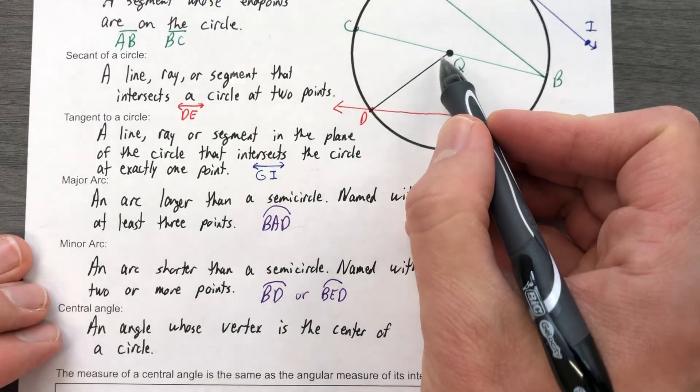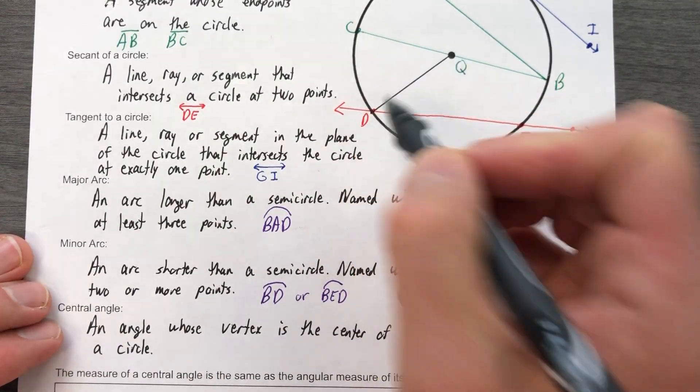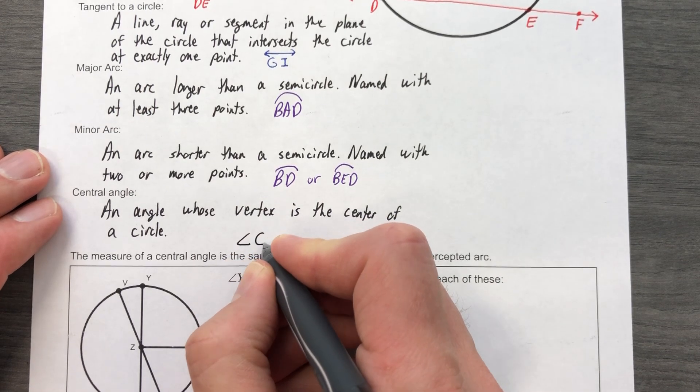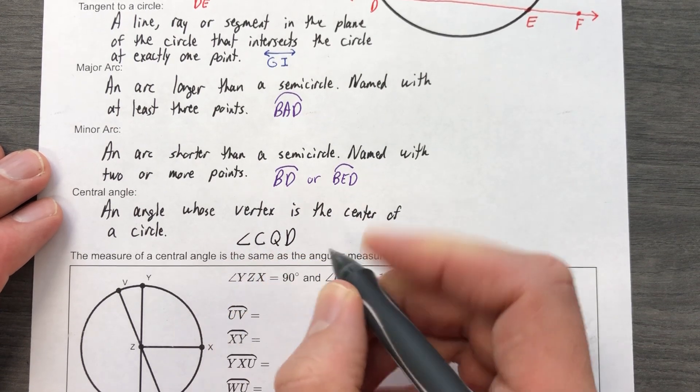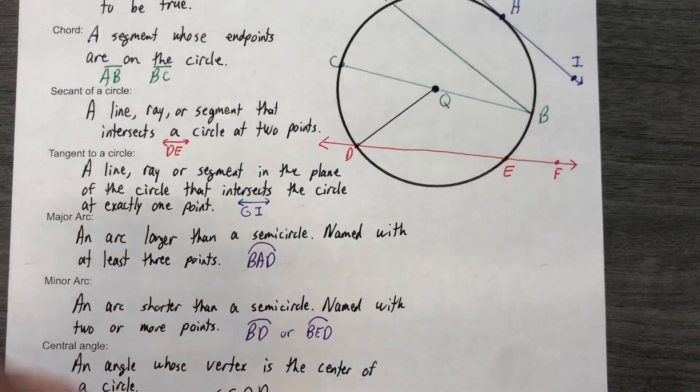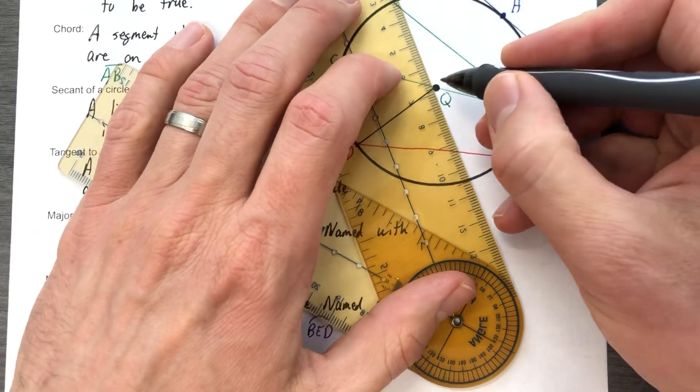And it's angle CQD, for example. I could put another one if I wanted to. I could do—let's connect this one right here—AQB.